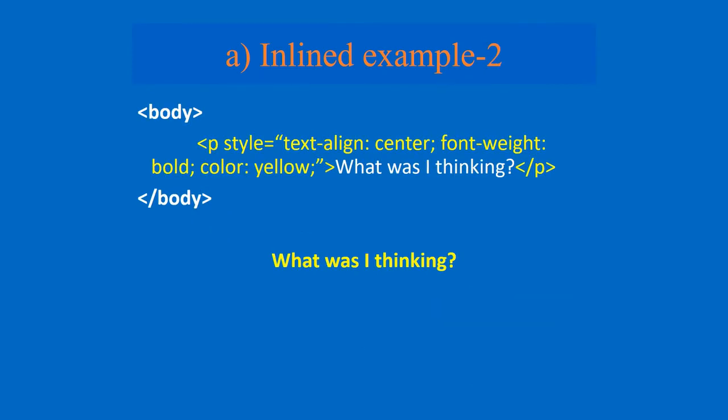So see the syntax for inline - it is very simple. For paragraph P, after that we give a space, then 'style' - S-T-Y-L-E - that is the attribute, equal to, and you open double quotes and close double quotes. In the middle you type all of the properties - any number of properties you can add inside this. The syntax is: property, colon, value, semicolon.